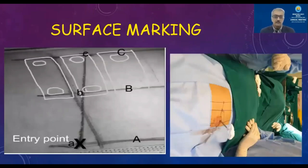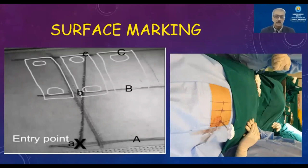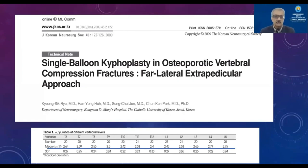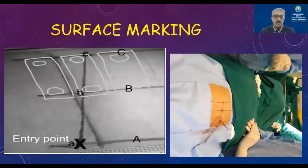This is a very important slide on surface marking. Draw line C along the lateral border of the affected vertebra on the opposite side, line B on the lateral border of the affected vertebra on the lateral side. Line A is two and a half times the distance between B and C, and is drawn parallel to line B. Point C is on the inferior border and point B is on the superior border of the affected vertebra on the lateral side. Where the line from C to B intersects line A is the entry point.